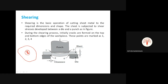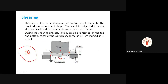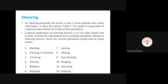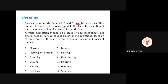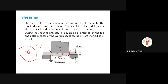During the shearing process, initially cracks are formed on the top and bottom edge of the workpiece. These points are marked as 1, 2, 3, and 4. We use a punch above and a die below, applying a cancelling force to the punch. As shearing proceeds, points 1 and 2 move towards each other and meet, as do points 3 and 4. This leads to separation of the material and creation of a hole on the workpiece, and we get a blank as shown in the figure.